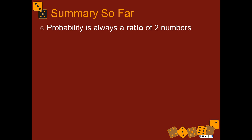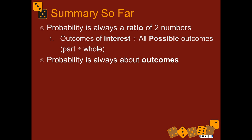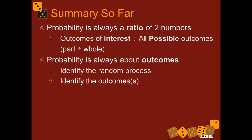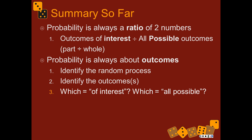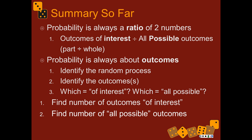So the summary so far: probability is always a ratio of two numbers — the outcomes of interest divided by all possible outcomes. Probability is always about these outcomes. If you can identify the random process, identify the outcomes of interest and all possible outcomes, and divide them, then you're golden.